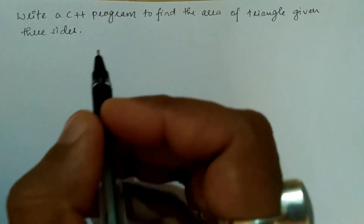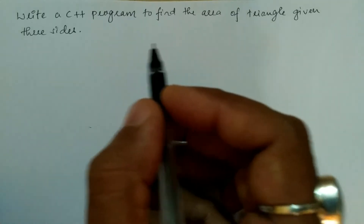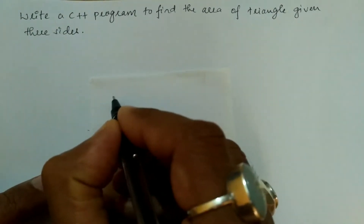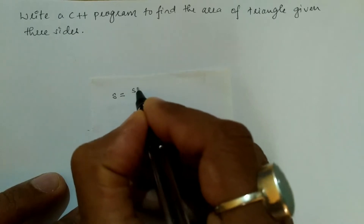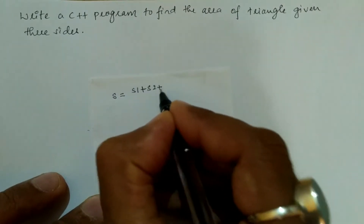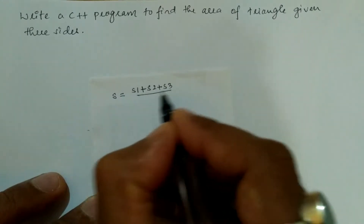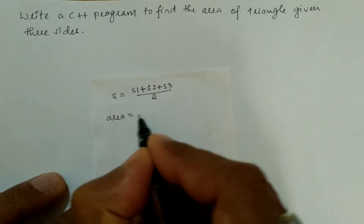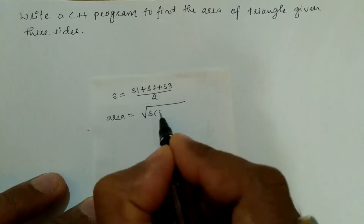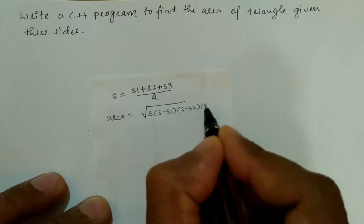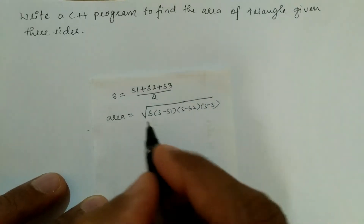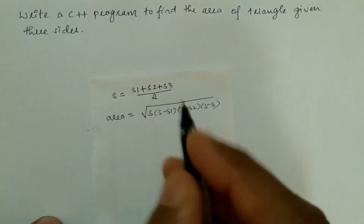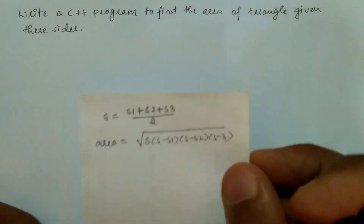Before we write the actual program, let us understand how to calculate the area of a triangle when three sides are given. We compute s = (s1 + s2 + s3) / 2, and then the area is equal to the square root of s * (s - s1) * (s - s2) * (s - s3). We simplify the expression inside the square root and store the result in the variable called area.